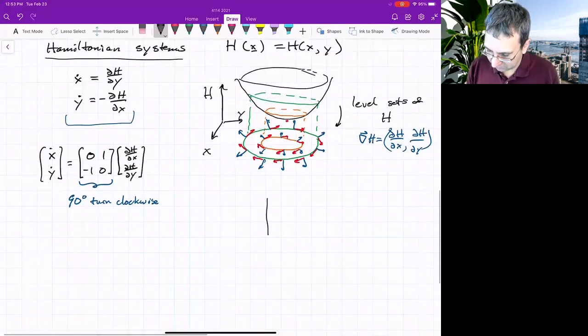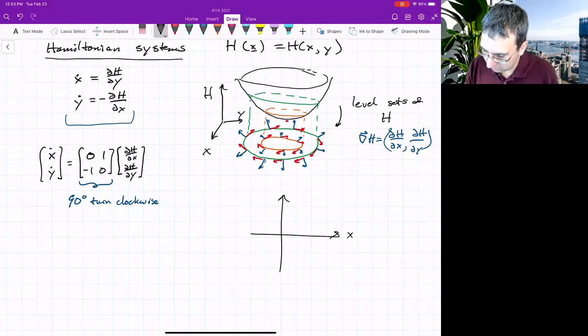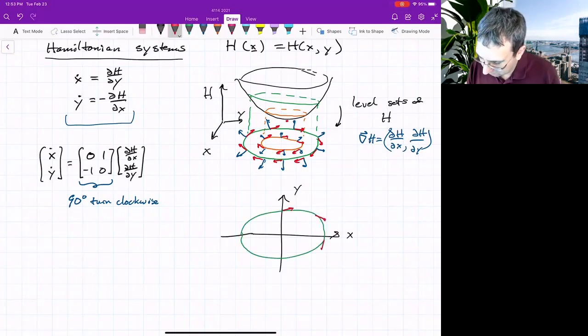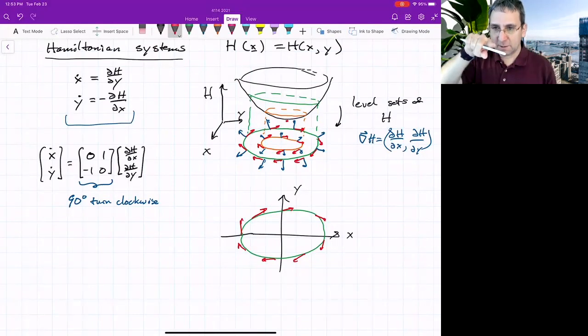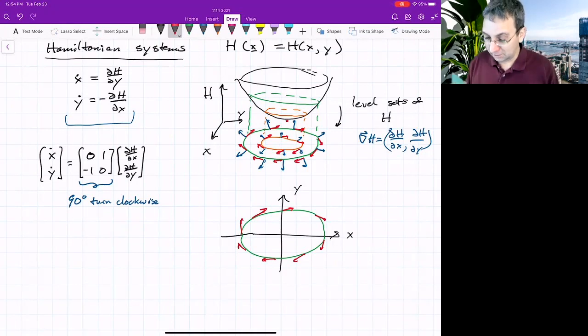So if I were to plot this in some different way, x and y, and maybe plot one of these contours, the vector field is always tangent to the level set. So if you start on a level set, the trajectory just wants to stay on a level set. And so these level sets tend to be closed curves. So it's like we get periodic orbits everywhere almost,